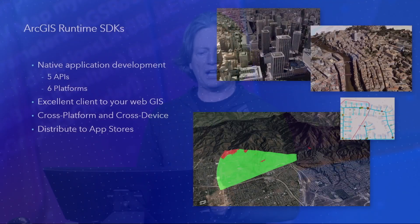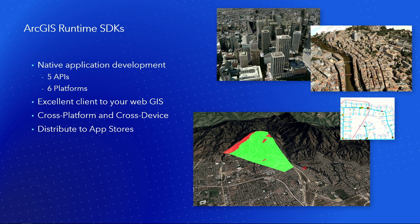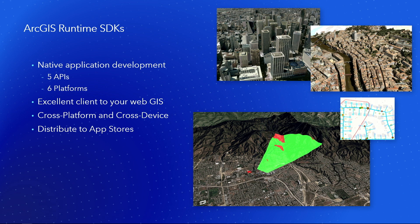That was the JavaScript API for building web apps. Now I want to transition to building native applications on devices, and for that we have the runtime SDKs. We've got five APIs working across six platforms. These APIs are excellent clients to your web GIS, and they allow you to build cross-platform, cross-device applications and get these distributed into the app stores.